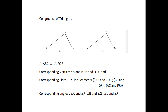If two triangles are concurrent, then their corresponding angles and sides that match one another are equal. In these two concurrent triangles, corresponding vertices are: A and P, B and Q, C and R. Corresponding sides are: line segments AB and PQ, BC and QR, AC and PR. Corresponding angles are: angle A and angle P, angle B and angle Q, angle C and angle R.